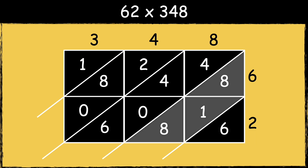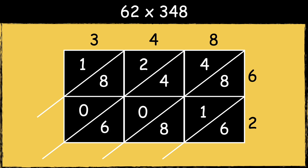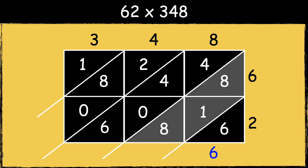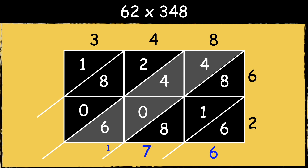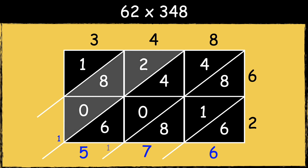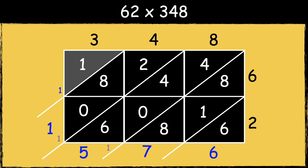The next step is to add along the diagonal strips, starting in the ones place going from right to left. In the ones place we have 6. In the tens place we have 8 add 1 add 8, which is 17. We will carry the extra 10 over to the next column. In the hundreds place we have 6 add 4 add 4 add 1, which is 15. We will carry the extra 10 over to the next column. In the thousands column we have 8 add 2 add 1, which is 11. We will carry the extra 10 over, then we have 1 add 1 which is 2. So the answer is 21,576.